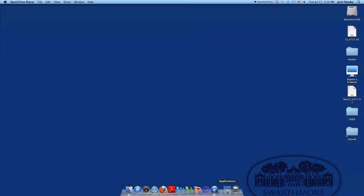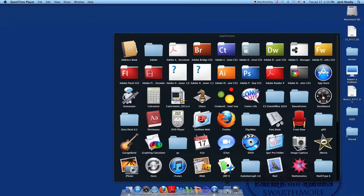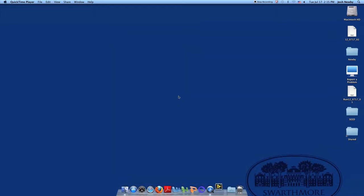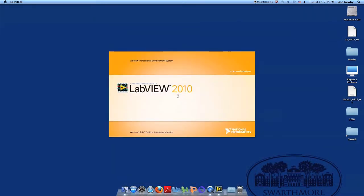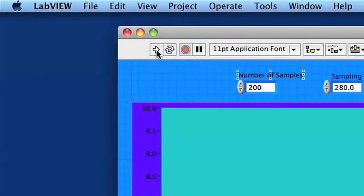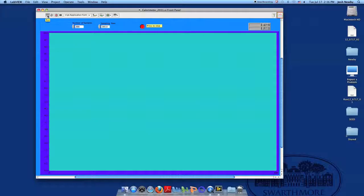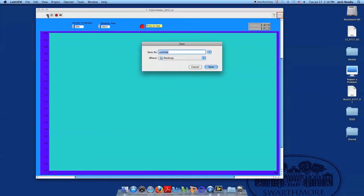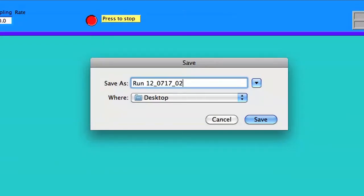Open the calorimetry program from the Applications folder. To start the data collection, click on the white arrow button at the top left of the window. In the pop-up window, type in a file name and save. If you do not save the file, you will not have any data at the end of your experiment.